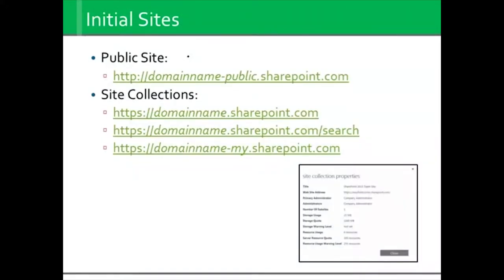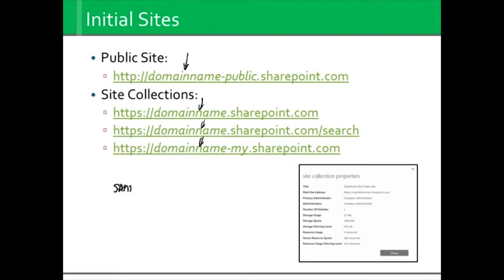When you first start with the sites, there are some initial sites. I put some paths here, but honestly these paths aren't very important. I just want to point them out because if you look in the navigation bar at the address, you're going to see them appear. It's going to be very uncommon that you type them in. When you have your SharePoint domain, your domain name populates into each one of these examples. So if my domain name is Sandra Classroom, my default team site would simply be sandraclassroom.sharepoint.com. You can access this SharePoint site collection from anywhere in the world as long as you have an internet connection and a valid login.